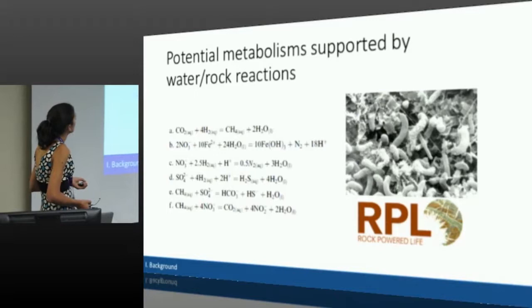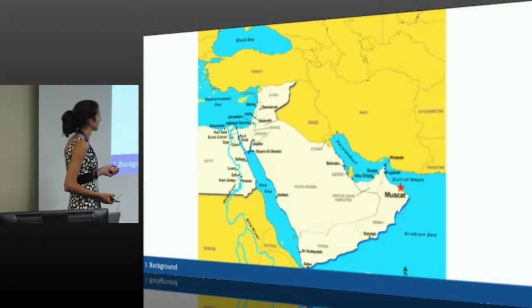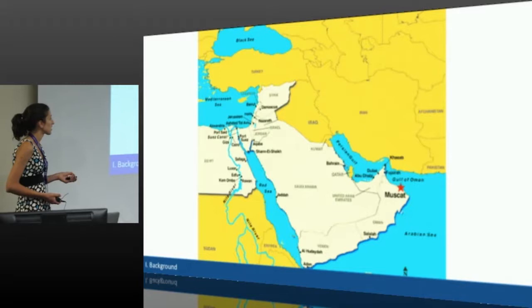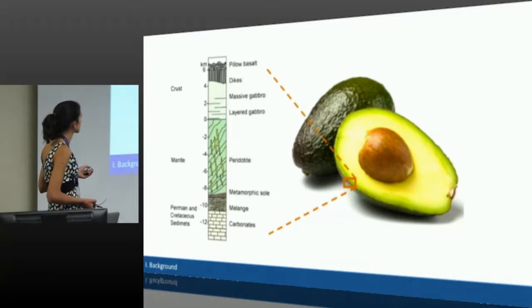I'm specifically working in Oman, which is located on the eastern edge of the Arabian Peninsula. Oman is a great place to study serpentinization because it's the world's largest and best exposed Ophiolite sequence. An Ophiolite sequence contains layers of upper mantle.